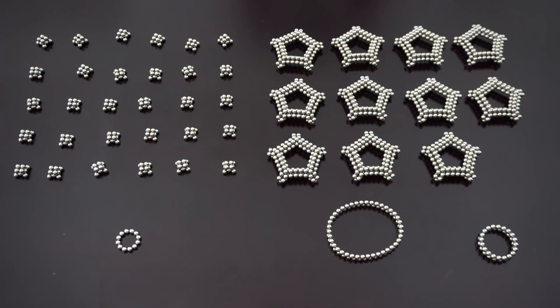Welcome back everyone. Today I'm going to show you how to make a truncated icosahedron, better known as a soccer ball shape. Before we get started, I just want to point out that the end shape is going to be pretty fragile.